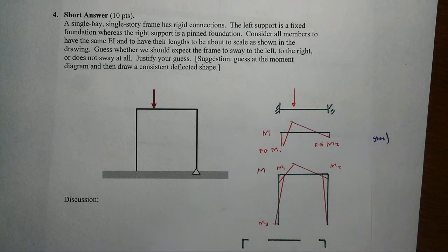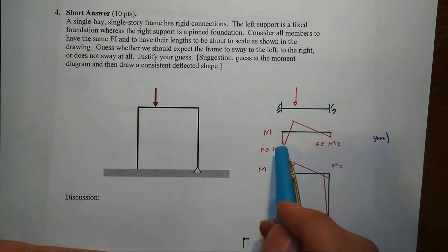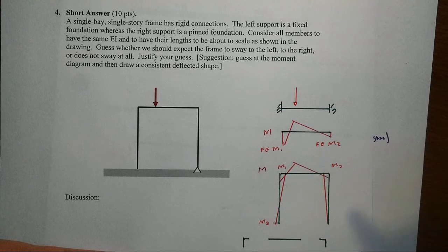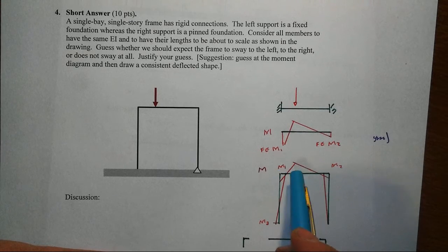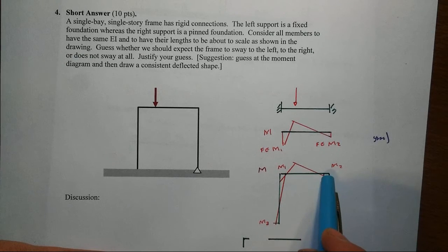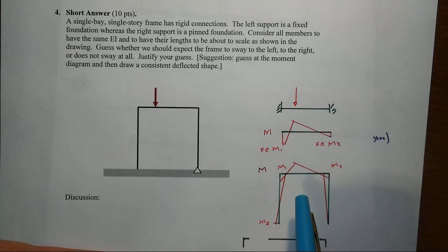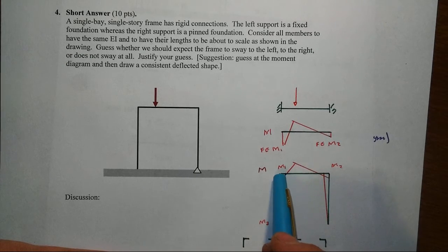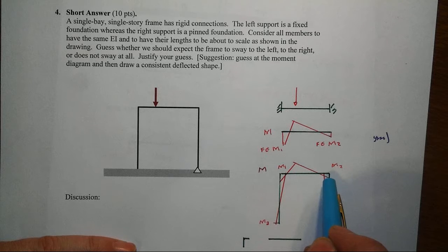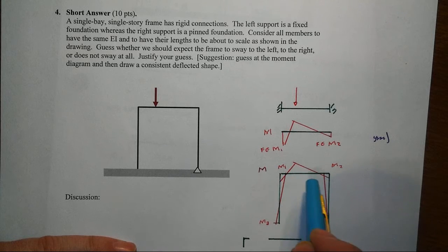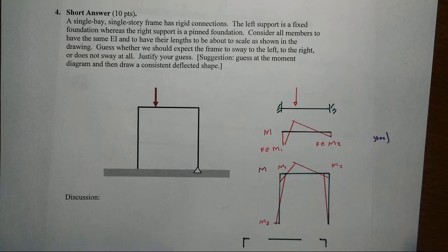If we think through this from a moment distribution kind of perspective, that means the unbalanced moment is largest at the left as compared to the right. And so when we release that one first, it kicks over the moment a little bit over to the right. And we're going to go back and forth. We might think that M1 will turn out to be larger than M2. A lot depends upon the situation.